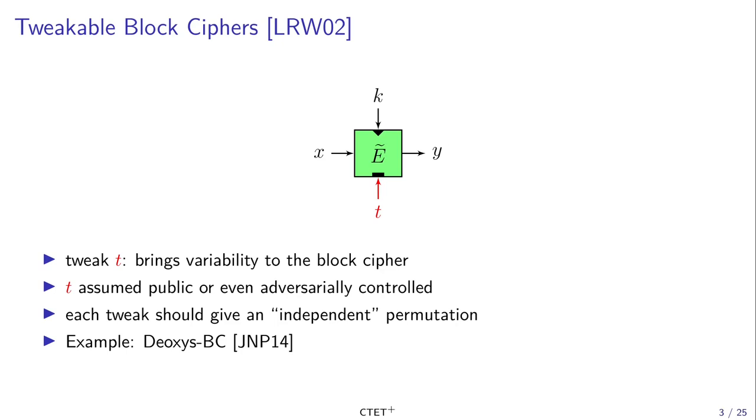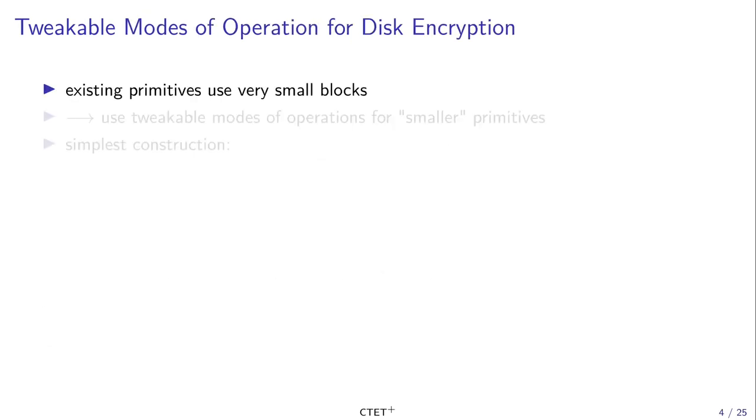We want a secure tweakable block cipher to give us a new independent permutation every time we pick a new tweak. We do have several examples of natively tweakable block ciphers like the Deoxys block cipher. However, for the problem we have, these tweakable block ciphers are not sufficient because existing ones use a small block size, typically 128 bits, which is not enough to encrypt a whole sector as a single block.